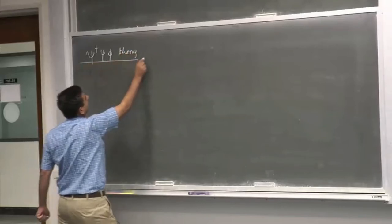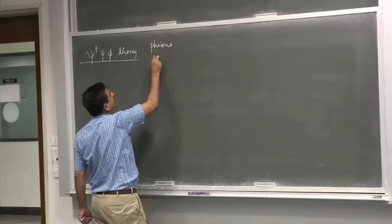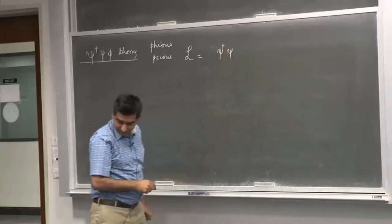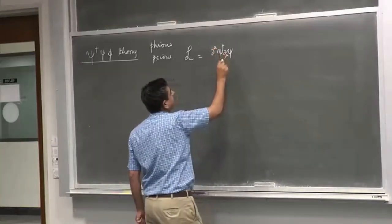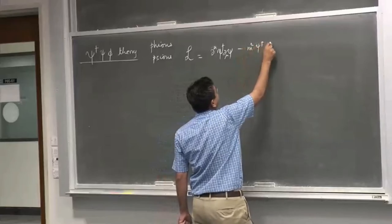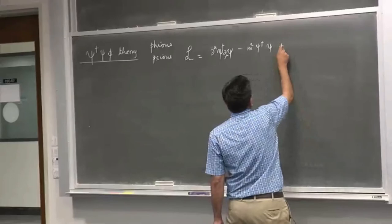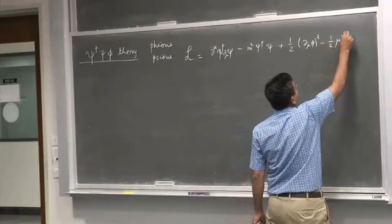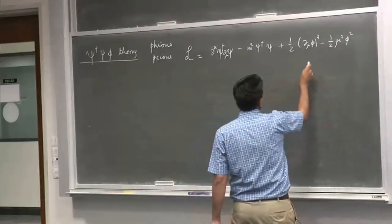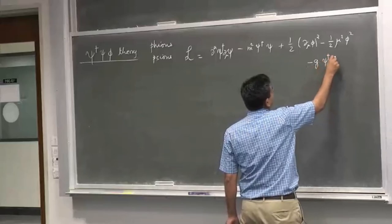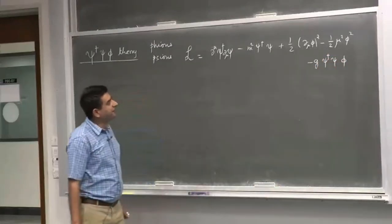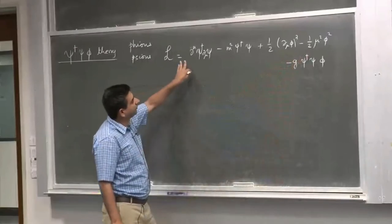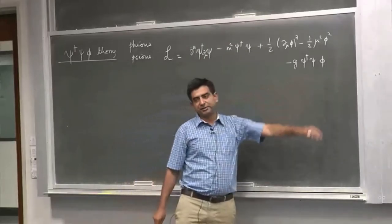The ψ†ψφ theory describes the interaction between pions and pions. The Lagrangian includes a free part plus an interaction term given by minus g ψ† ψ φ. This is the interaction between φ-ons — a bosonic scalar field — and ψ-ons, a complex massive scalar field. This is the interaction term for the theory.